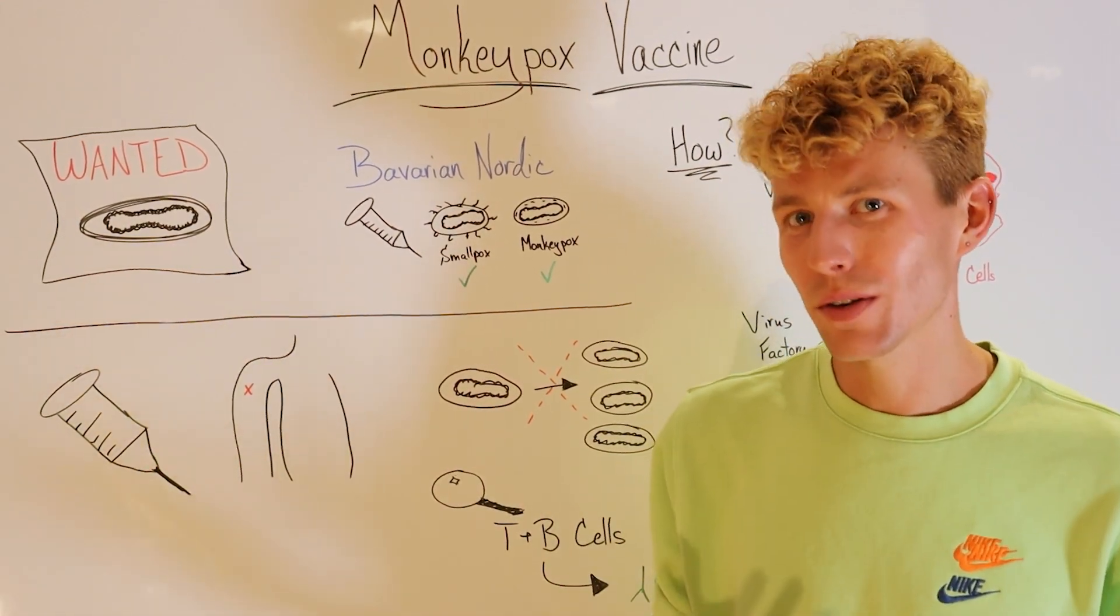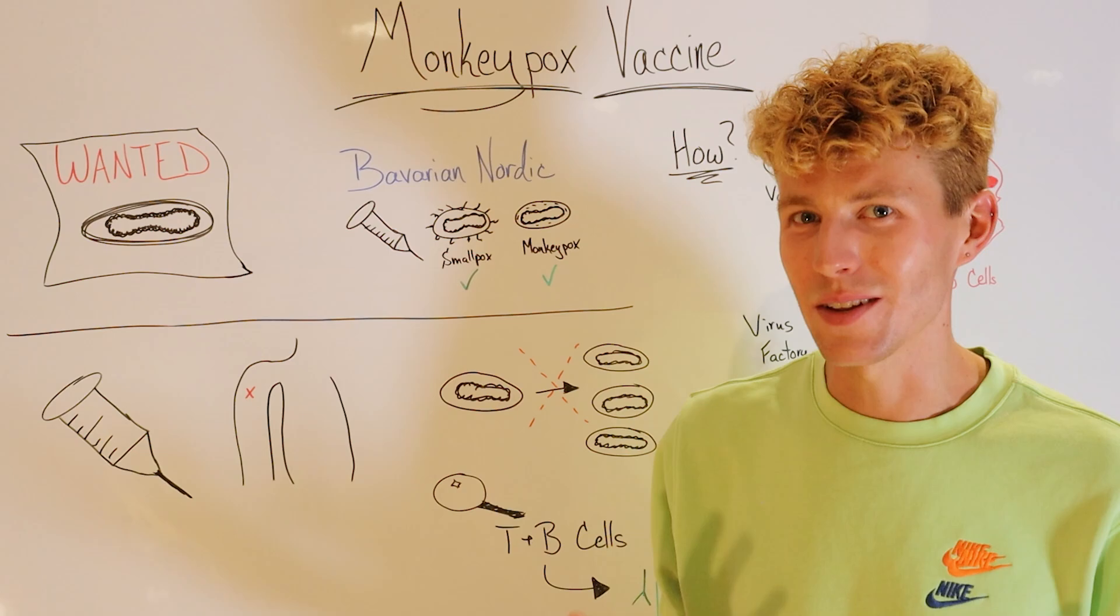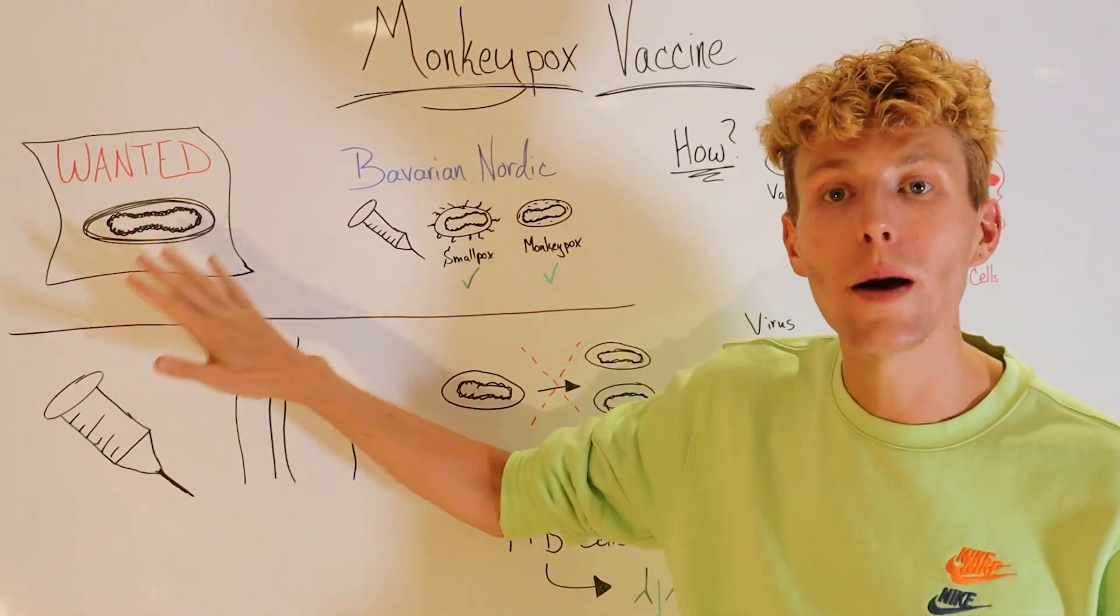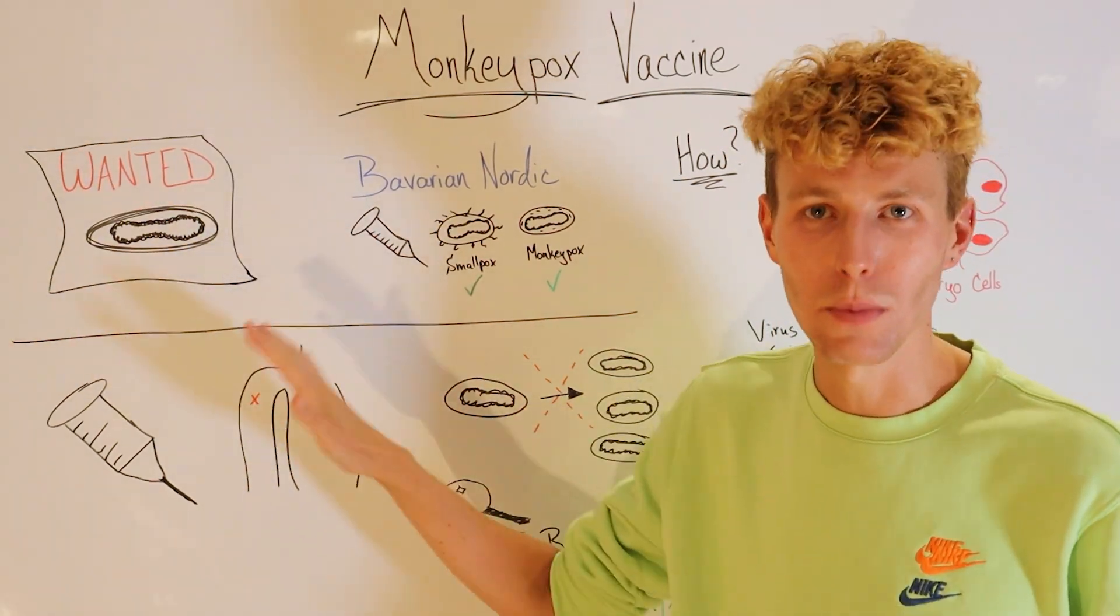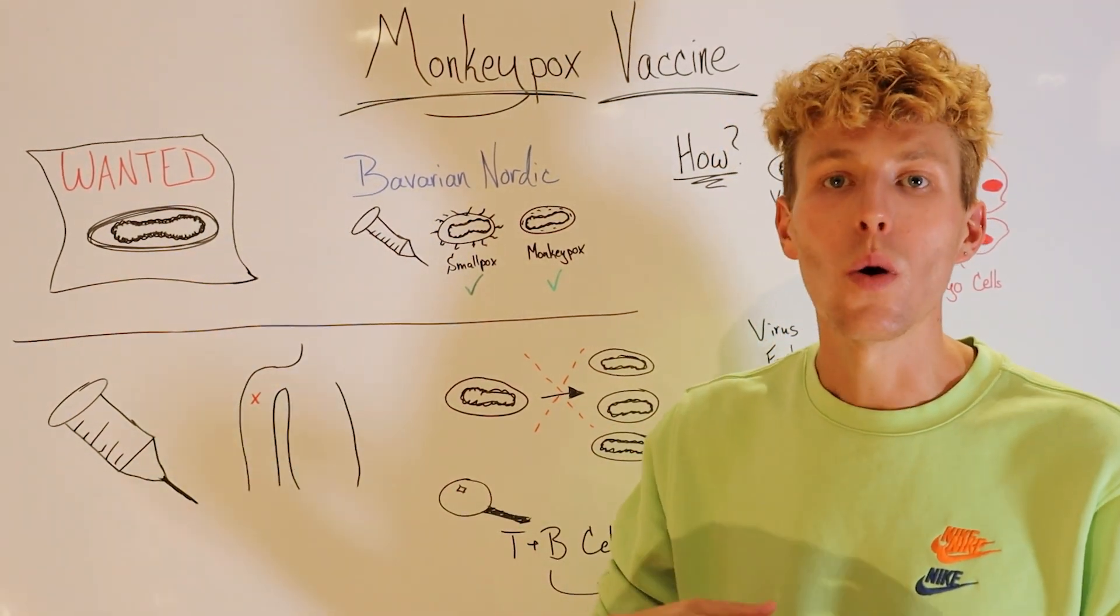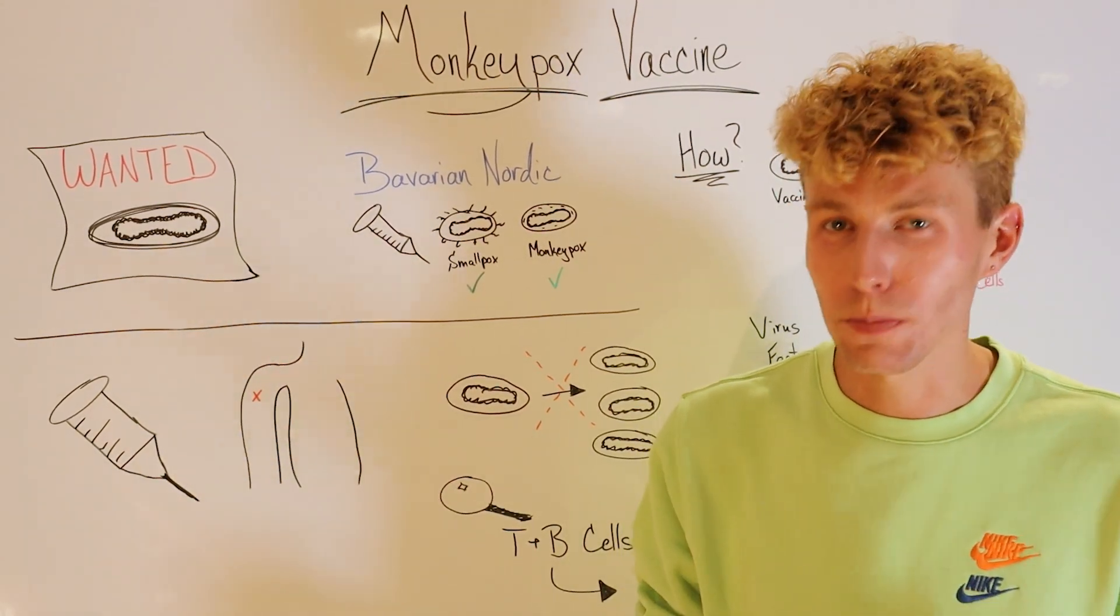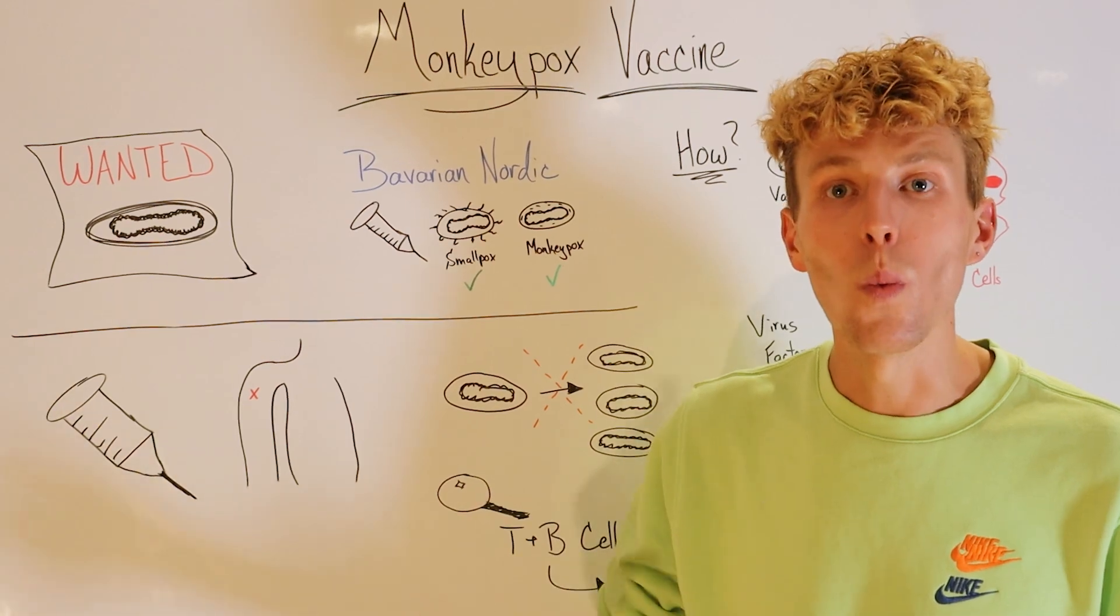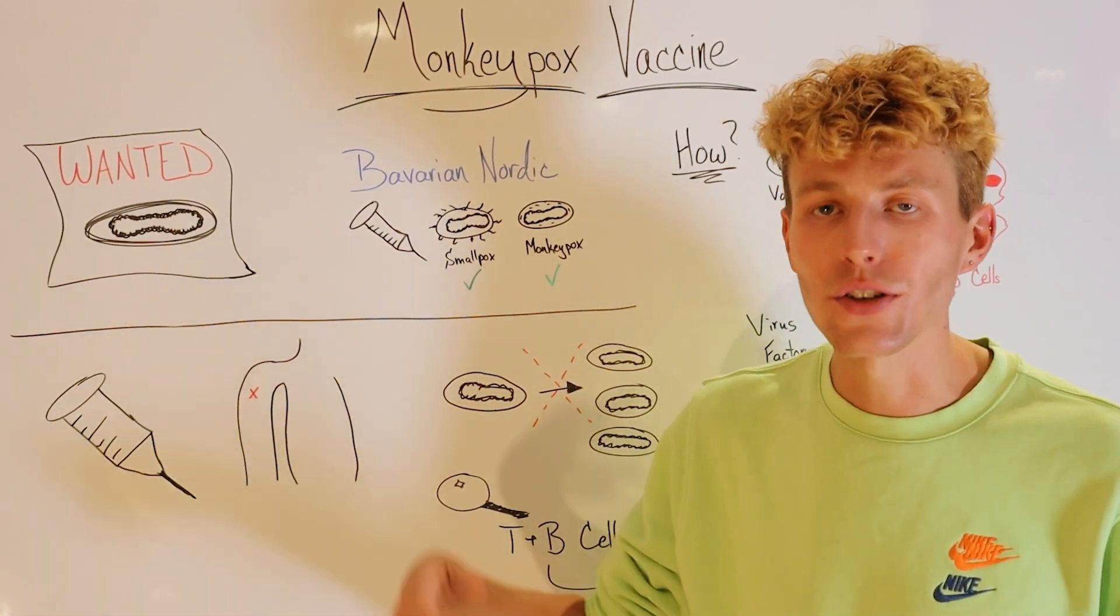But first, let's get a quick reminder of how a general vaccine works. Vaccines work by giving our bodies a snapshot of what a particular pathogen looks like, kind of like a wanted poster for that pathogen. It can use a whole pathogen or parts of the pathogen, such as proteins, to allow our immune response to recognize what that particular virus or bacteria looks like.